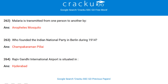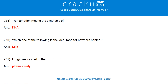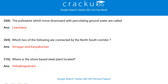Who was the head of the 10th Finance Commission? K.C. Pant. Malaria is transmitted from one person to another by the Anopheles mosquito. Who founded the Indian National Party in Berlin during 1914? Chempakaraman Pillai. Rajiv Gandhi International Airport is situated in Hyderabad. Transcription means the synthesis of RNA. Which of the following is the ideal food for newborn babies? Milk. Lungs are located in the pleural cavity.